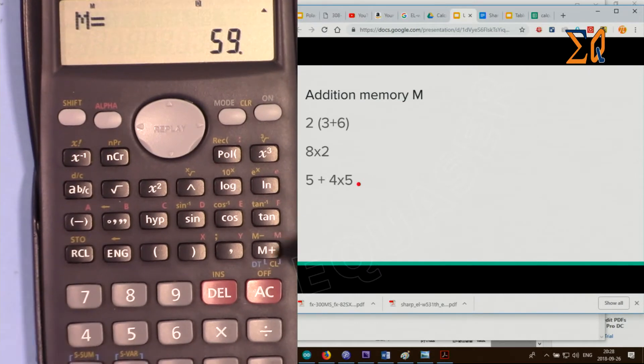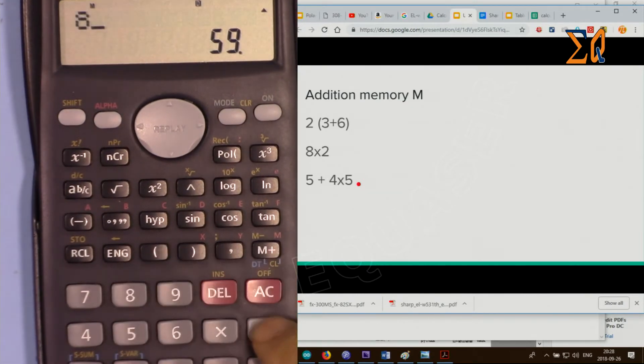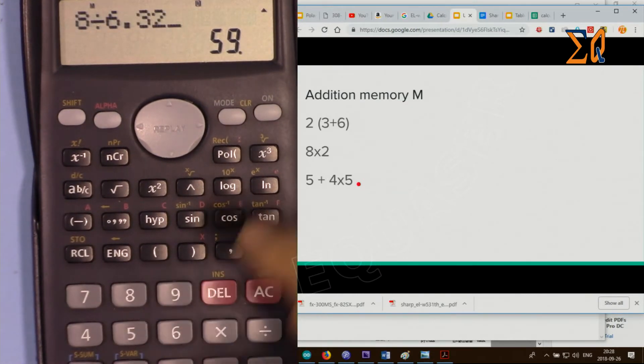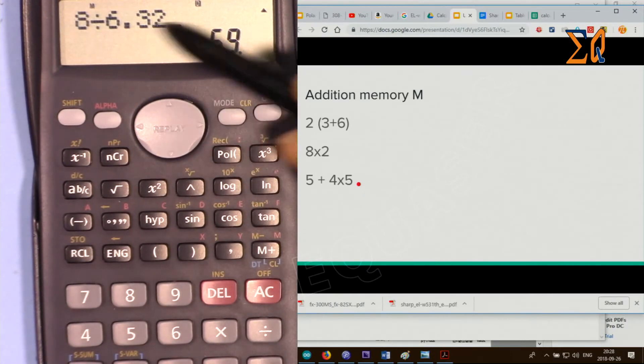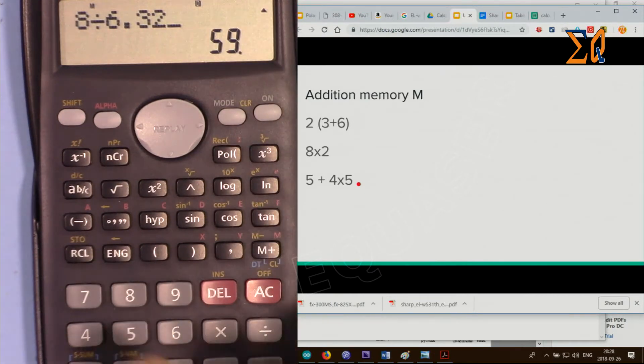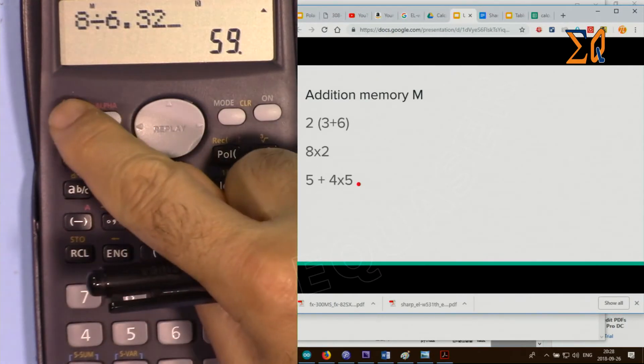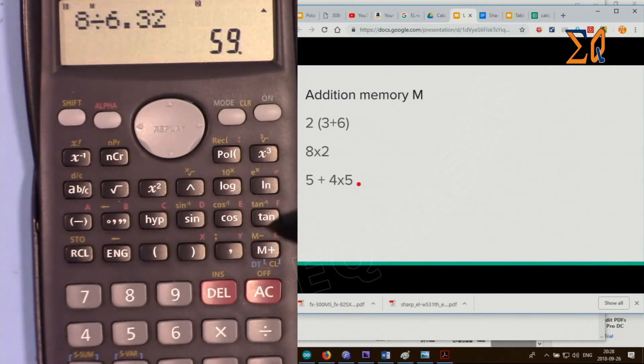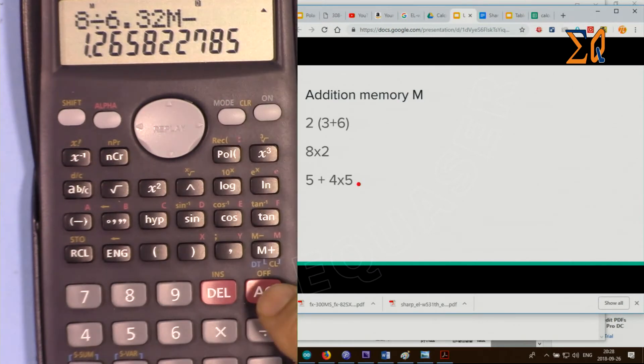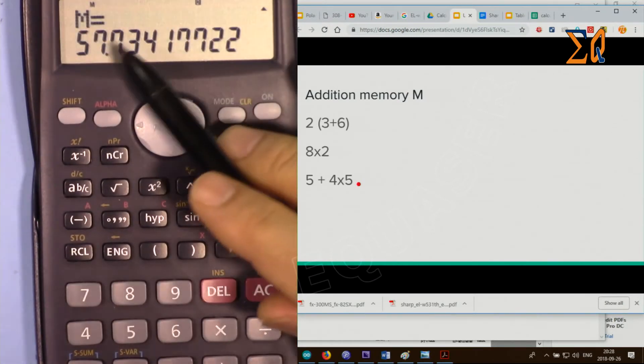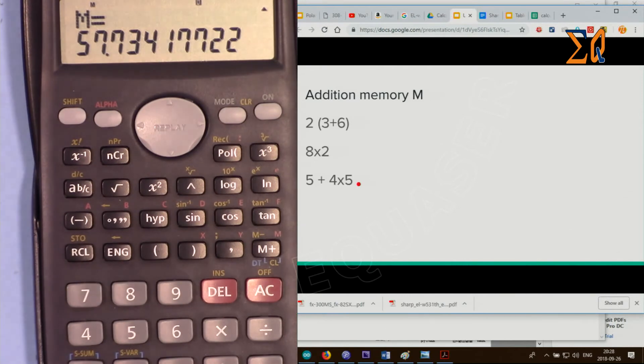We also have memory minus. Let's say you want to do 8 divided by 6.32 and subtract this from memory. This time press shift and then this button, because M minus works with shift. Now it has been subtracted. If I do recall M, now the value is that value that you see on the screen.